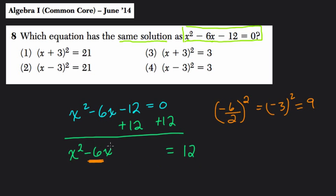What do we do with this number? Well, we put it right here, plus 9. That makes this side factorable and solvable. But we also have to add 9 to this side. Don't forget that. We have to balance our equation. 12 plus 9 is 21.